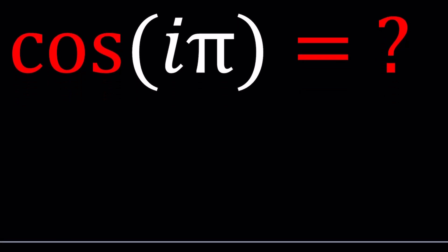So Euler's formula gives us a really nice relationship between sine, cosine, and the exponential function. So we can write e to the power ix as cosine x plus i times sine x.